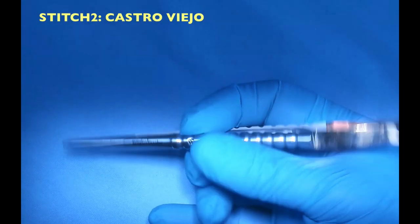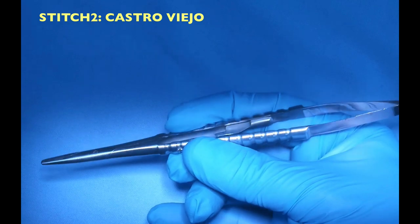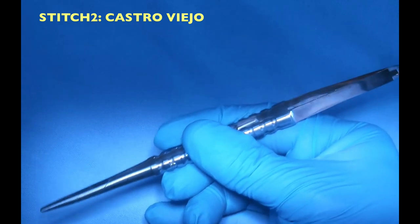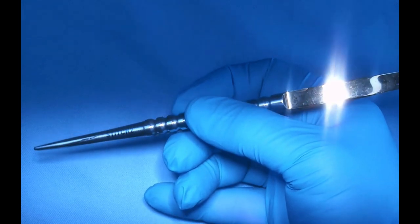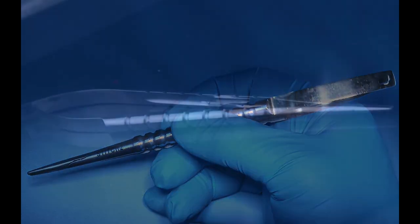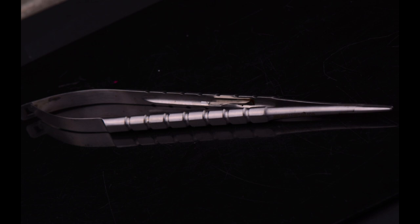Instrument number two is the Castro Viejo, which is my preferred needle holder. It has a locking mechanism that with one click locks in the needle, and with another press it releases the needle. Very important for accurate and precise suturing.